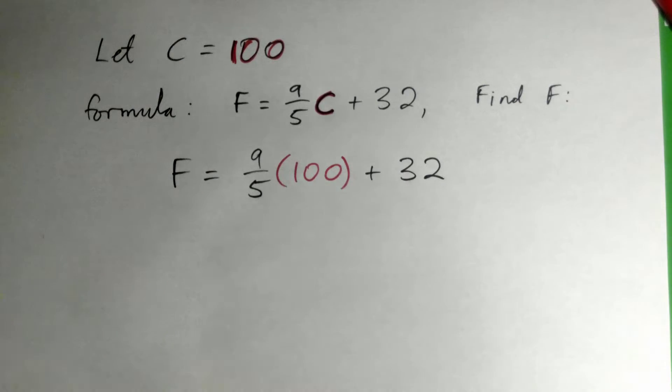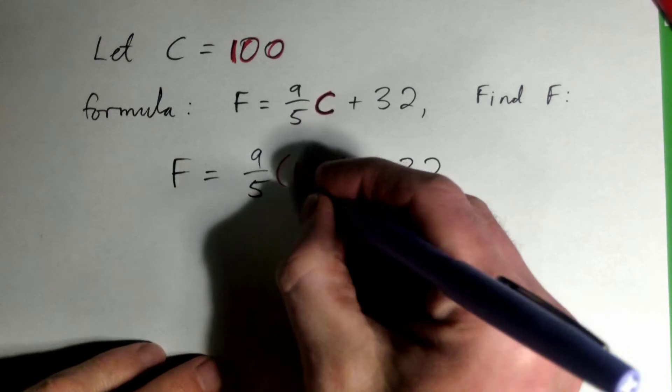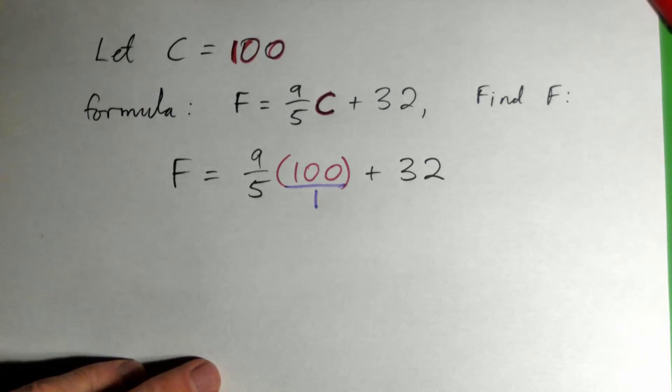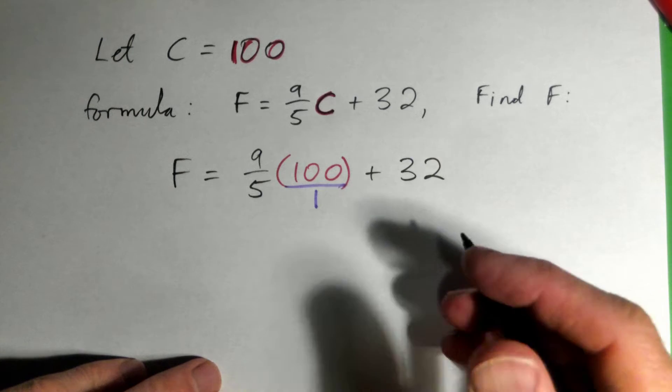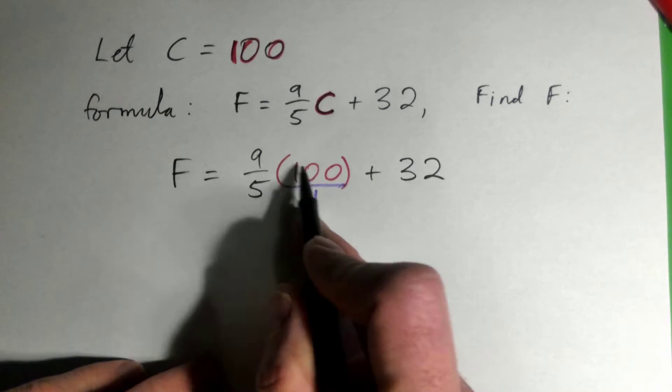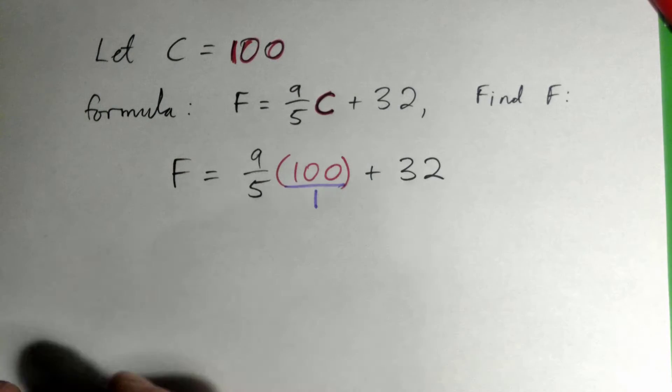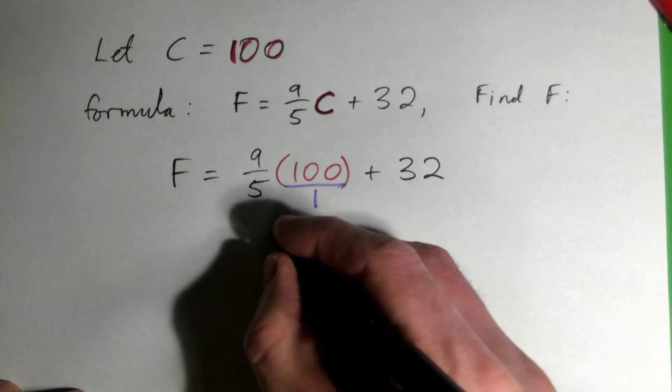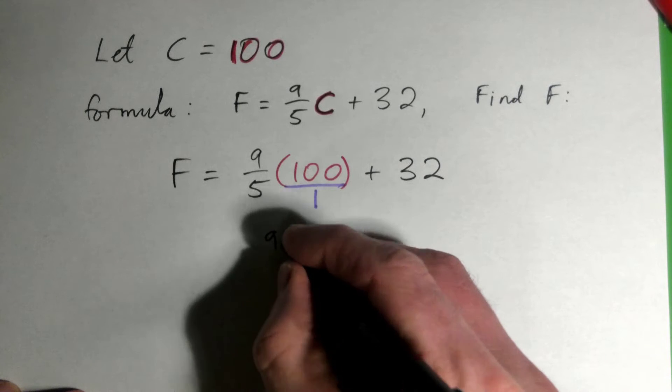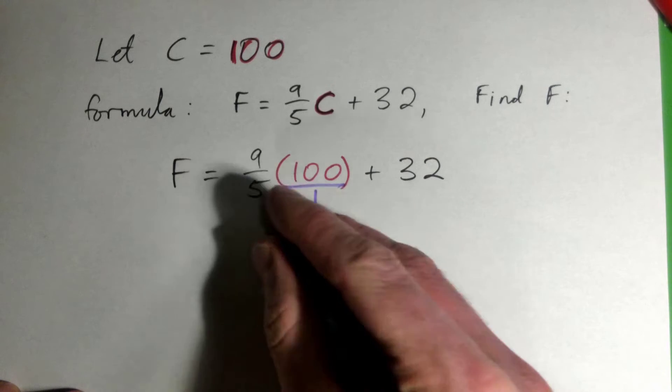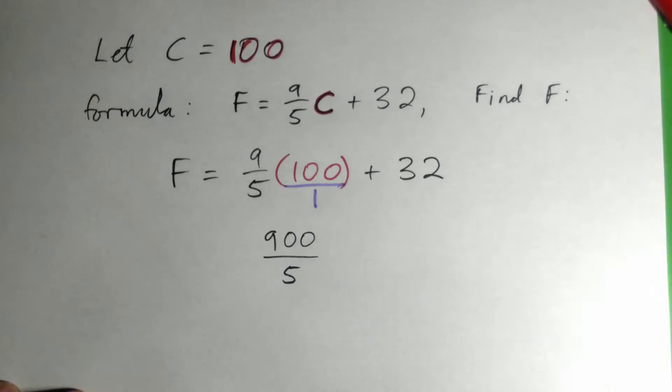So we can change that to a hundred over one, right? And you can either cross cancel or you can write this as 900 over 5. Either way is fine. A lot of students like to multiply the tops, 900, multiply the bottoms, 5 times 1 is 5, and then simplify. That's fine, you can do that.